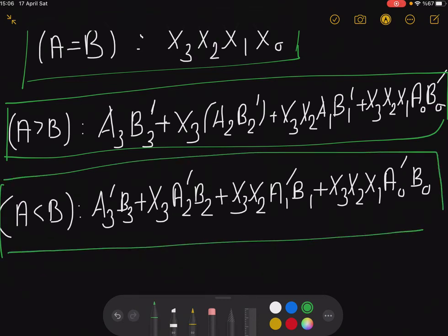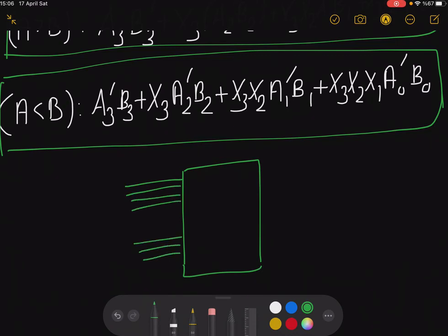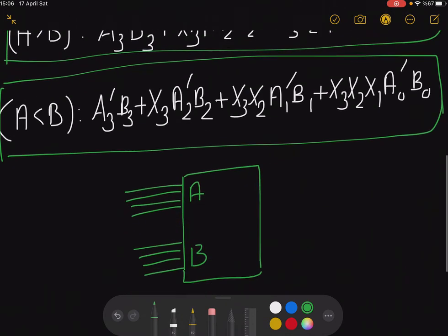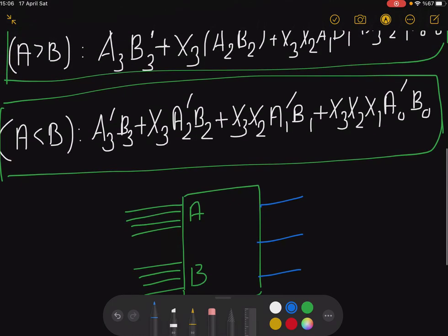Now here you have your three conditions, and the circuit will look like this. You have namely your number A and number B entering this circuit for comparison, and you will have three output signals.